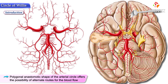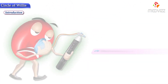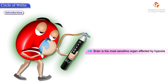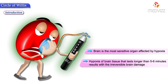These alternate routes are extremely essential for proper brain functioning, because the brain is the most sensitive organ affected by hypoxia. Hypoxia of the brain tissue that lasts longer than five to six minutes results in irreversible brain damage.